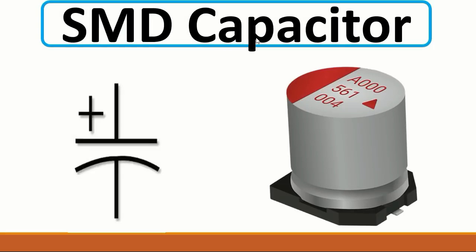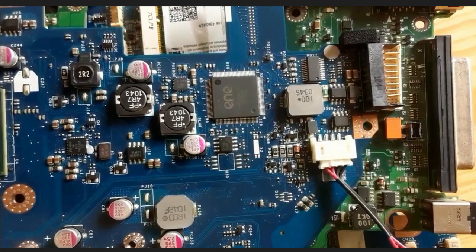The second component is the SMD capacitor. This is its symbol. Here we have plus and minus — this is a polarized capacitor. This color over here means the negative terminal and here we have the positive terminal. We call it an electrolytic capacitor. As you can see here on the motherboard, we have electrolytic capacitors. Here we have plus, and here also we have plus.